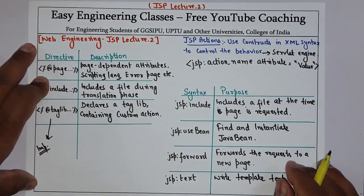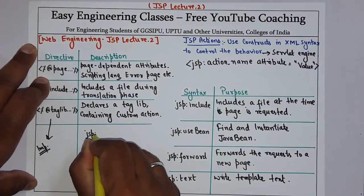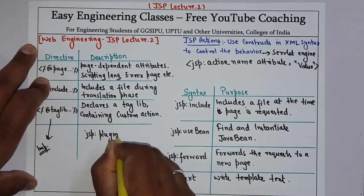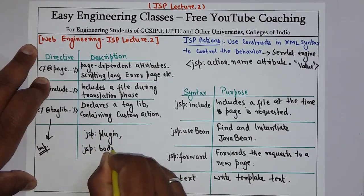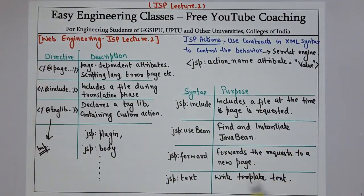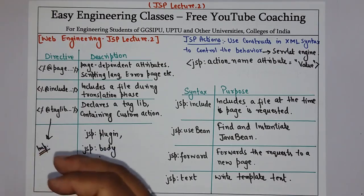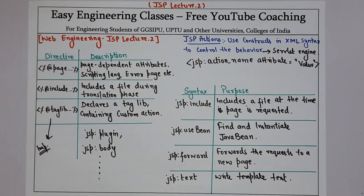These are some of the JSP actions. We have more actions like jsp:plugin, if you need to include some plugin in your JSP, then we have jsp:body and so on. As per your requirement, you can use different JSP actions. In this video we discussed the different types of JSP elements, basic terminology of JSP programming, different directives, and JSP actions. Thank you for watching. Please subscribe to my YouTube channel for more tutorials on JSP, servlets, and other computer science subjects.